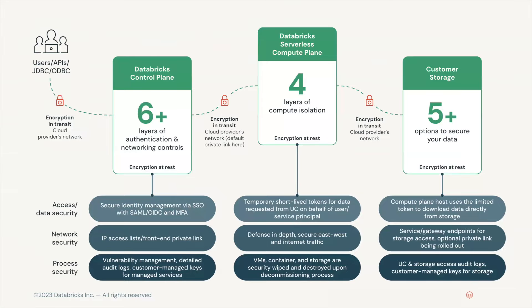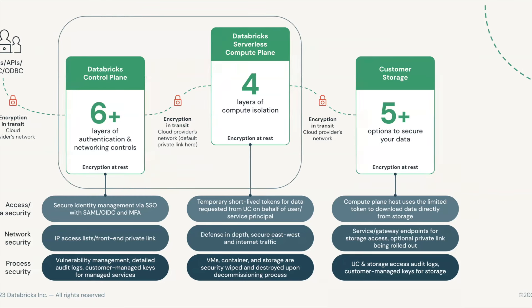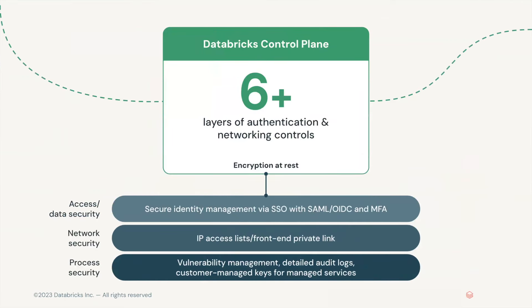A reminder from last time: we discussed the multiple hops that the SQL query goes through as it is submitted by a user in the control plane using the UI or the API, how it makes its way to the serverless compute plane and fetches data from customer storage. Today we'll focus on some of the security mechanisms in our control and compute planes. We'll start from the Databricks control plane where we previously discussed the six layers of authentication and networking controls, then dive deeper into the serverless compute lifecycle process before moving on to the compute plane.